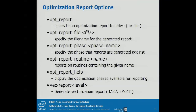Also particularly important — and I heard a talk at ISC that said one of the most important features of a compiler is reporting — because then you can figure out what went wrong with the code in terms of compilation: why didn't it optimize, or why didn't the compiler vectorize? Those are very important for MIC as well.